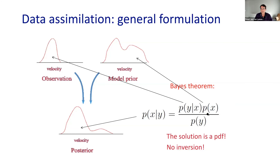In Bayes' theorem, the denominator P(Y) is just a normalization constant — the observations are given, so P(Y) is just a number. It doesn't depend on the state, so we don't need to worry about it in any calculation. The solution to the data assimilation problem is a PDF. There's no inversion — data assimilation is not an inverse problem. It's a multiplication problem: we multiply the prior with the likelihood. In its fundamental form, it is a multiplication problem.